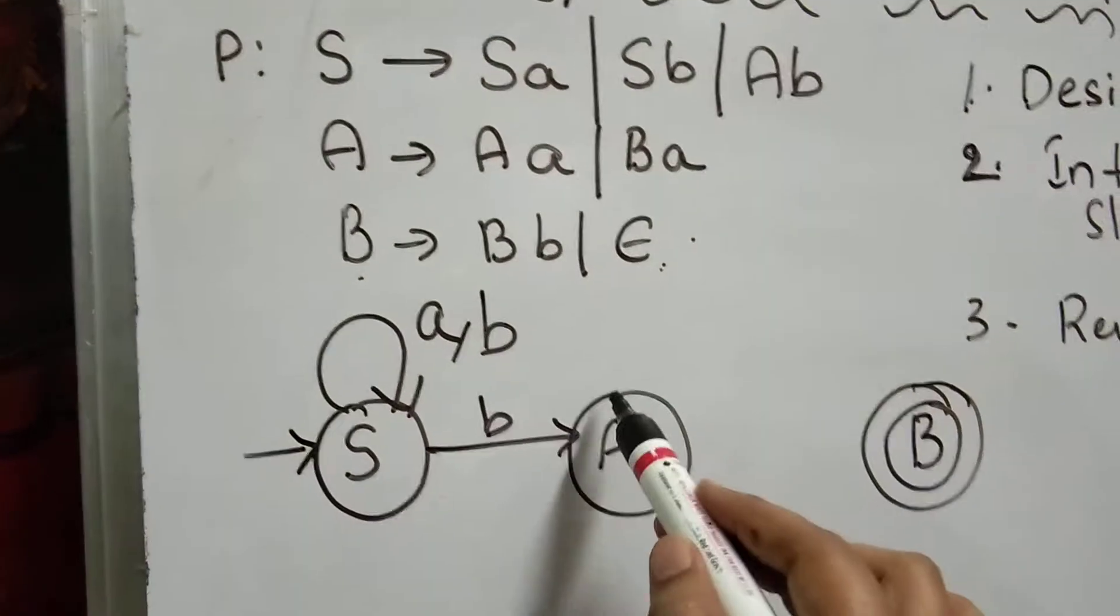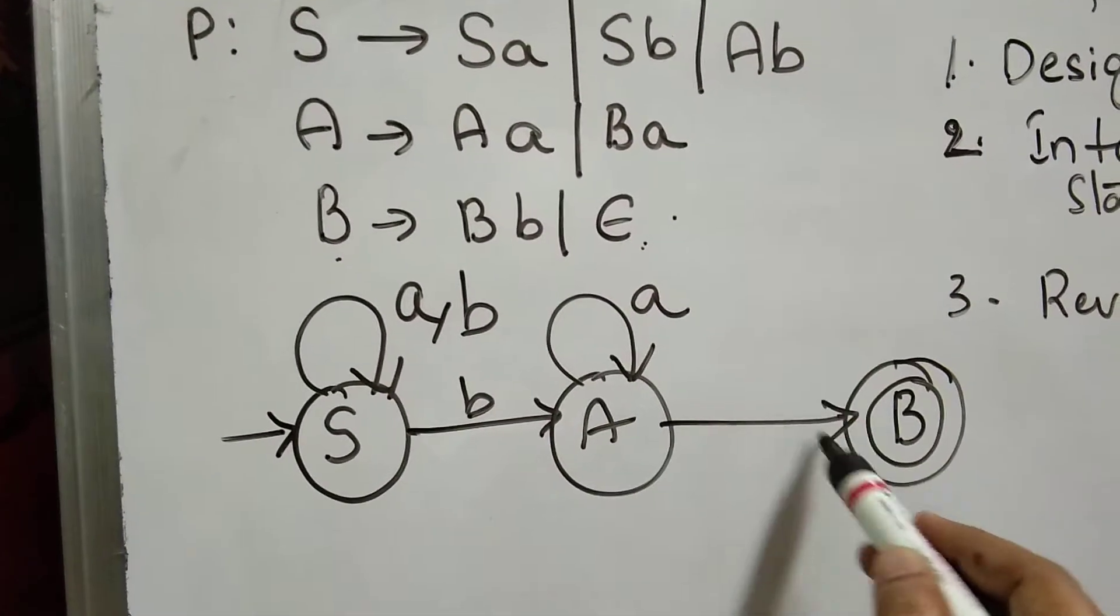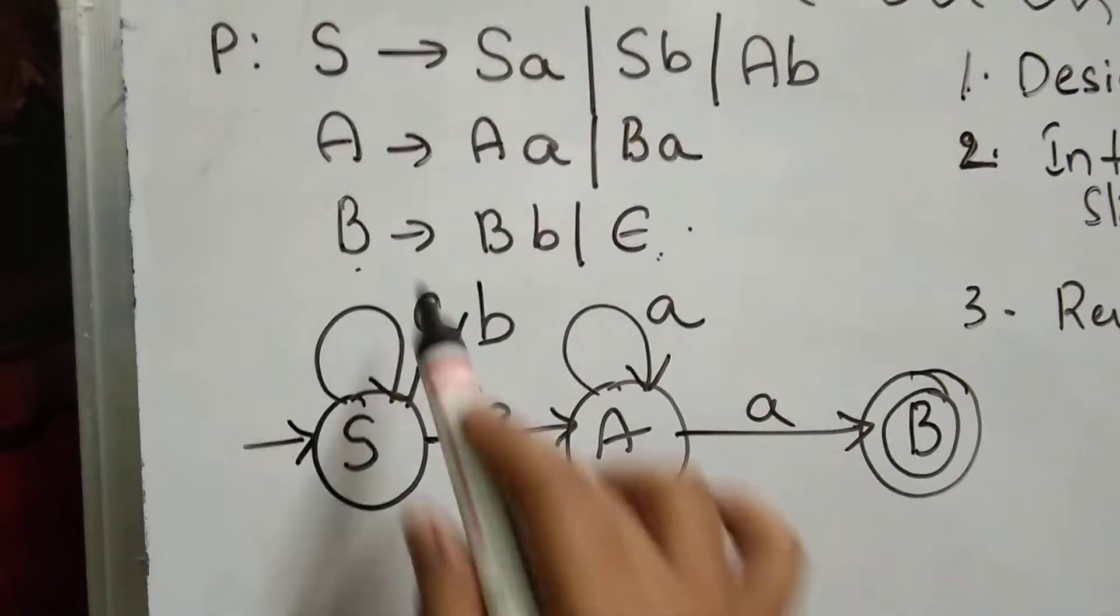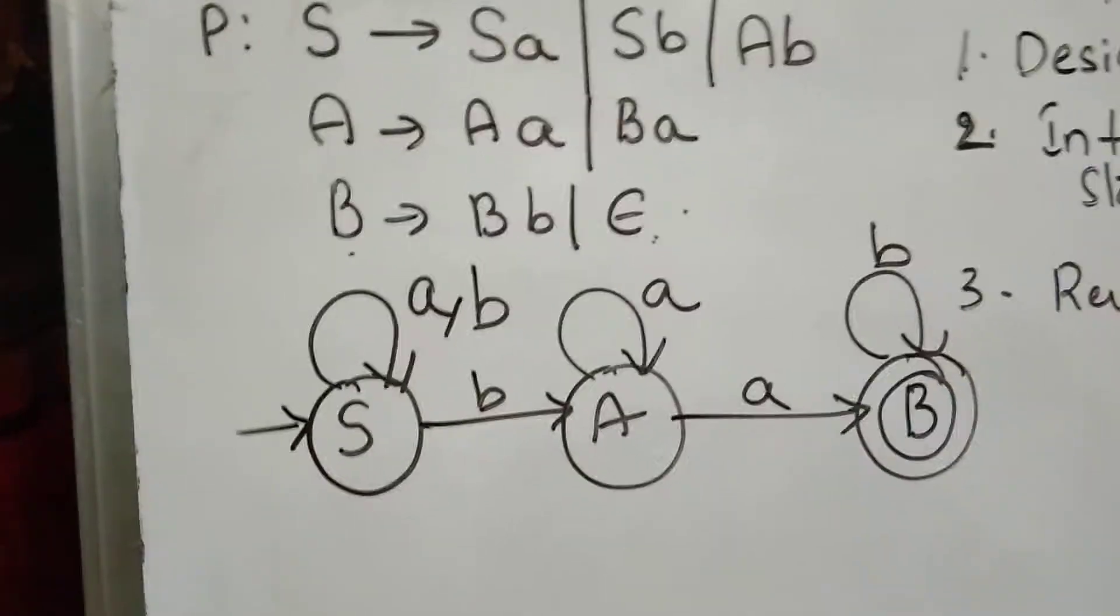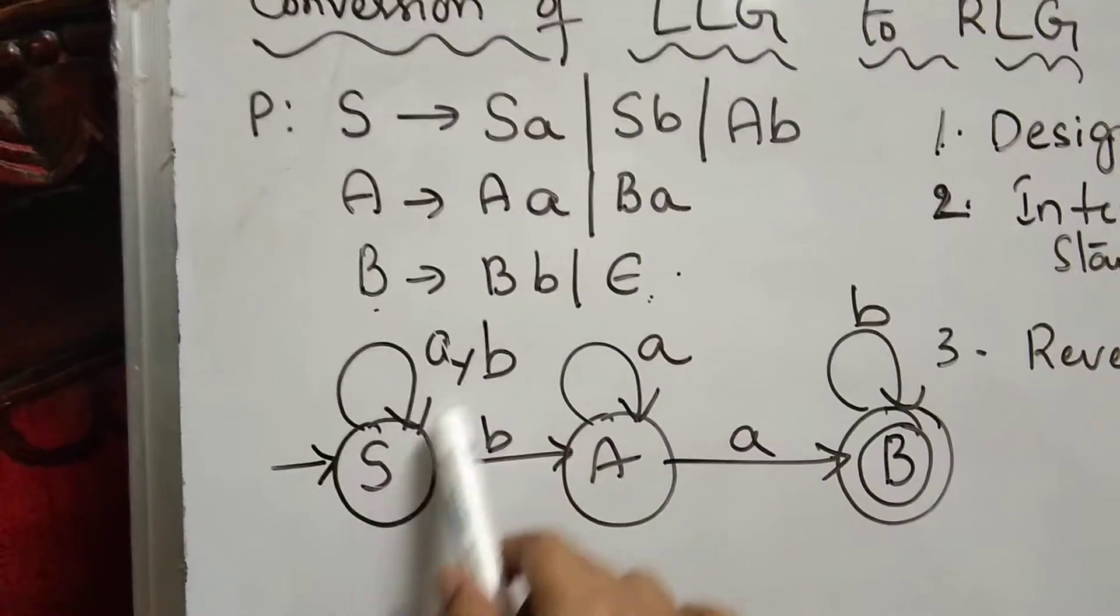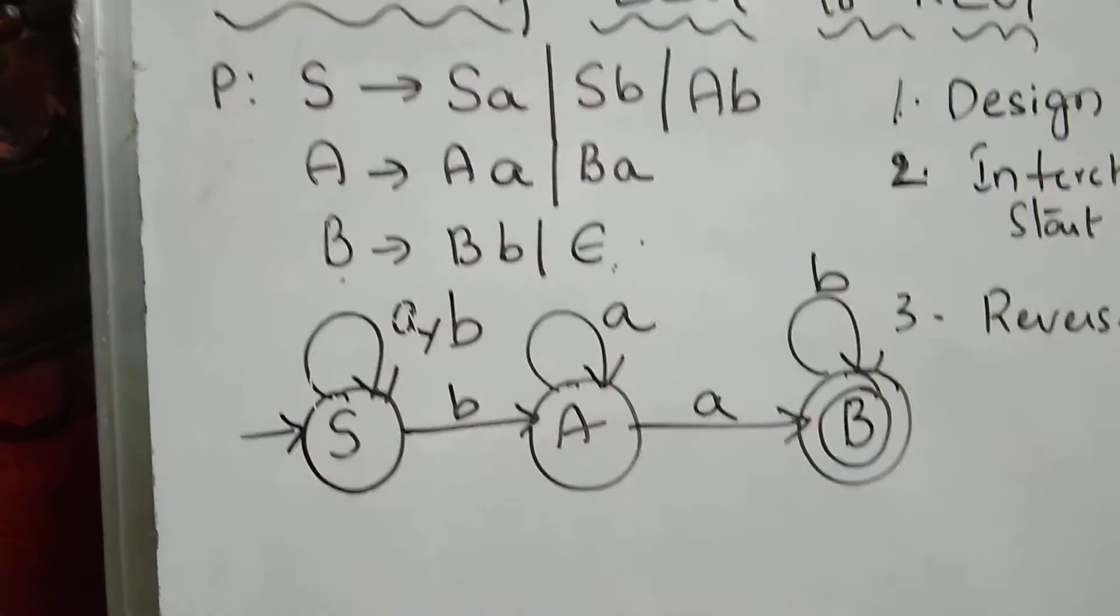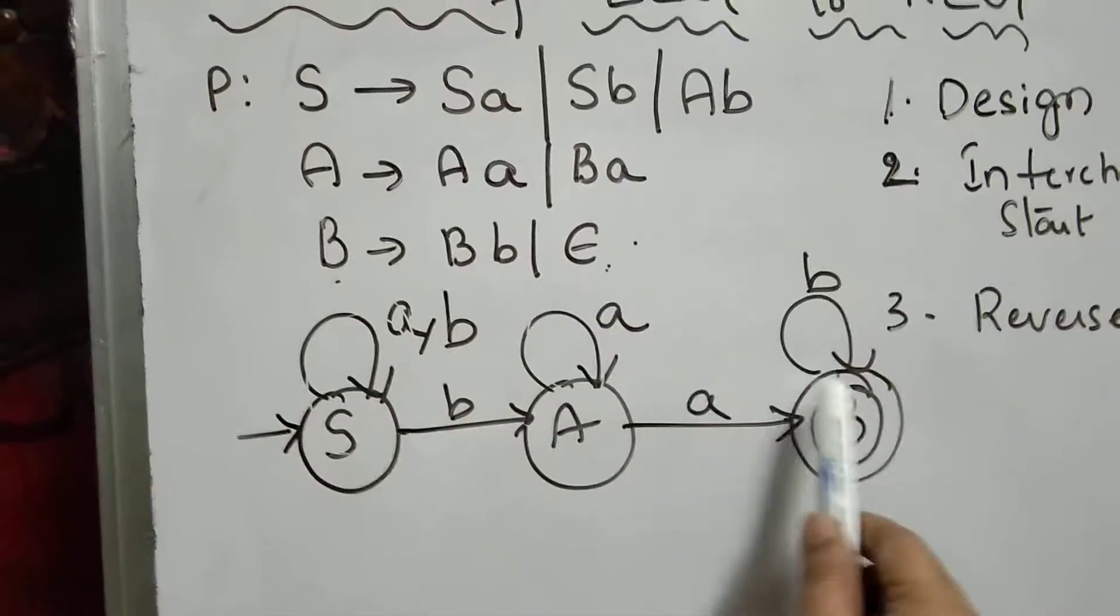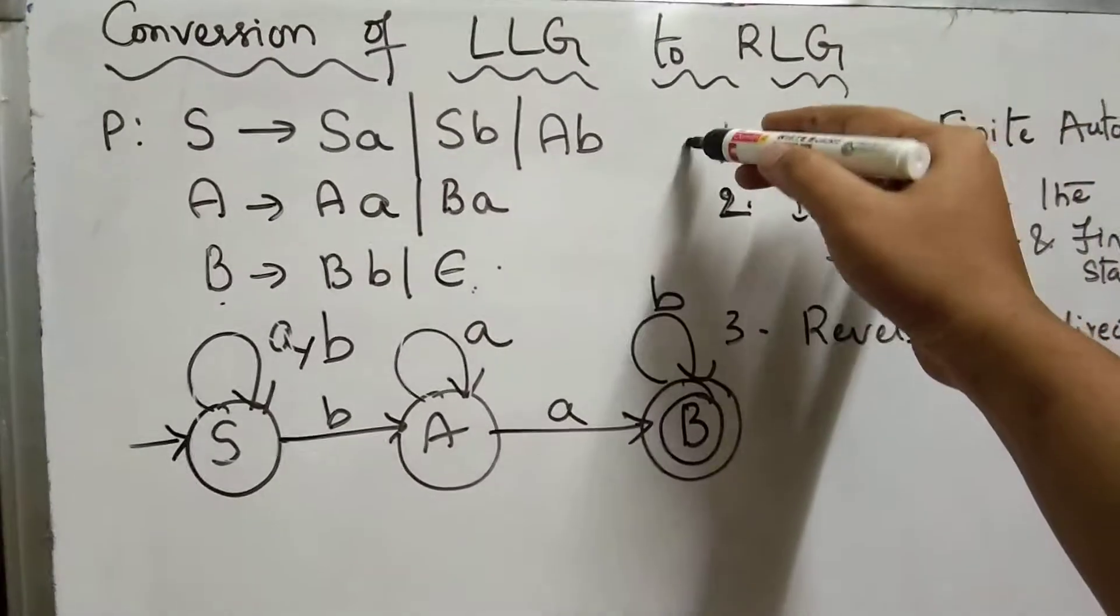Next, from A we go to A with input A. From A to B with input B. Then from B to B with input B. We have S to Sa, Sb, Ab, A to Aa, Ba, and B to Bb or epsilon. The finite automata is complete. This is the first step.